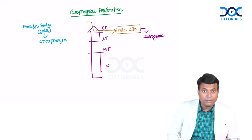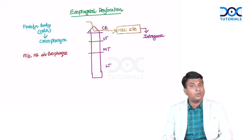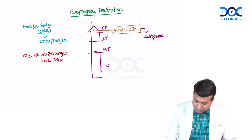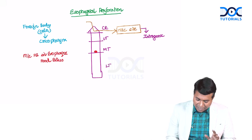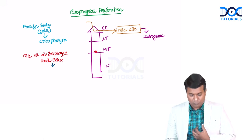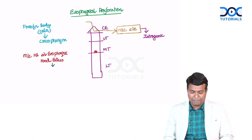Another important MCQ: what is the most common foreign body in the esophagus? The most common foreign body in the esophagus is a food bolus — the food you are eating can get obstructed on the way. If there is a food bolus obstruction, there is usually an underlying stricture or malignancy causing the issue. Please remember that point.